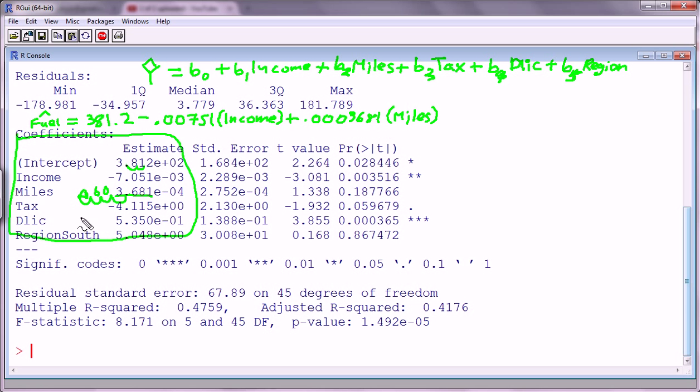Then for tax, the coefficient is negative 4.115 times 10 to the zero, which is just saying it's just negative 4.115. So that's easy. Negative 4.115 times tax. So tax seems to have a negative effect when taken together with all these features.